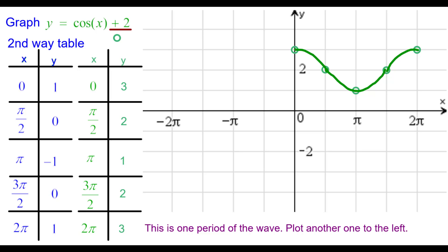We'd like to plot another one to the left. So again, we'll start at zero comma one and go back two pi. So it'll be at negative two pi comma three. Back two pi, a period, to negative three pi over two comma two.